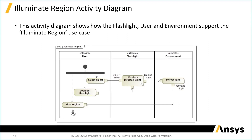The activity diagram describes what each of the different elements do functionally to achieve the goal. Once again you see the user, the flashlight, and the environment. We're talking black box, and we're talking about what they do — what functions they perform.